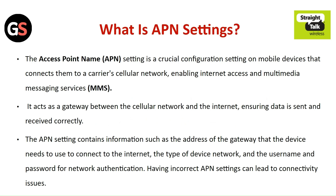The APN settings ensure data is sent and received correctly. They contain information such as the address of the gateway the device needs to use to connect to the internet, the type of network, and the username and password for network authentication. Having incorrect APN settings can lead to connectivity issues.